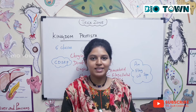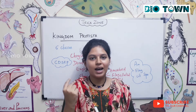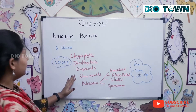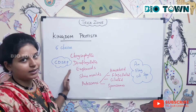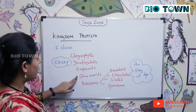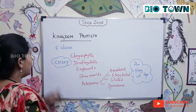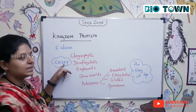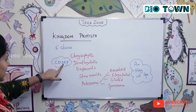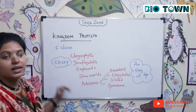In today's session, we will learn how to read Kingdom Protista in one minute using a simple trick. There are five classes under Kingdom Protista: Chrysophytes, Dinoflagellates, Euglenoids, Slime Molds, and Protozoans. You can remember these as CD-CEP — Chrysophytes, Dinoflagellates, Slime Molds, Euglenoids, and Protozoans.